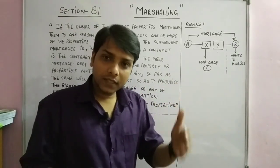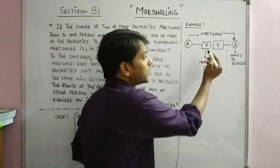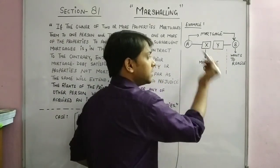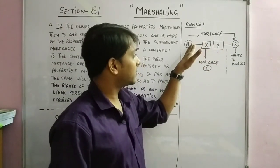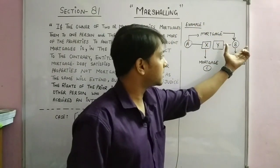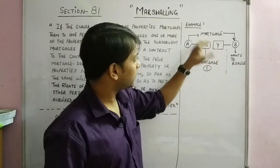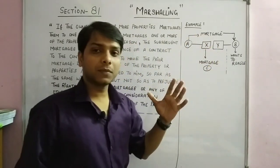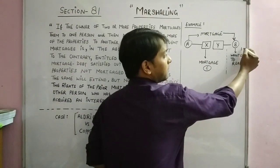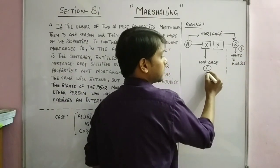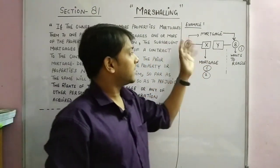Since a property can be further mortgaged, A took one of those two properties — property X — and created a subsequent mortgage with C as well. So now: X and Y both were mortgaged to B, and X was additionally mortgaged to C. B becomes Mortgage 1 and C becomes Mortgage 2.